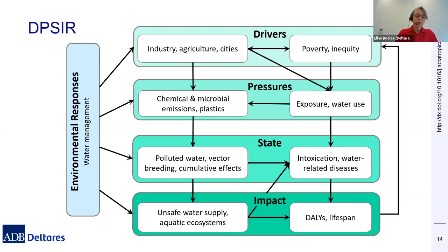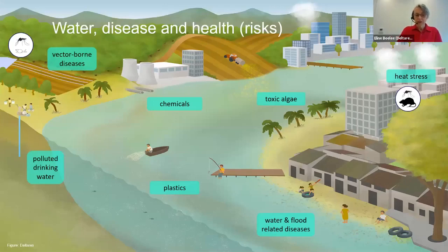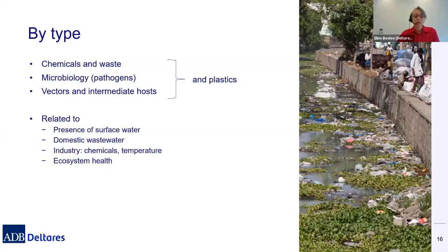From the water side, we can think of responses to all of these, while the public health side addresses diseases and prevention. A big driver to all of this is climate change. Climate change affects how polluted water gets more polluted, how people are exposed more to water, how we need more water storage, and how our dependence on water increases. We're going to look at three groups, and plastics is a separate one that comes back in all the groups. We relate this to surface water but also groundwater. Normally we also look at the marine environment, but for this presentation we focus mainly on fresh water.